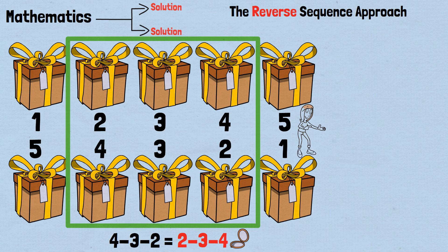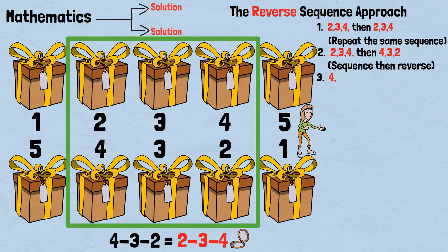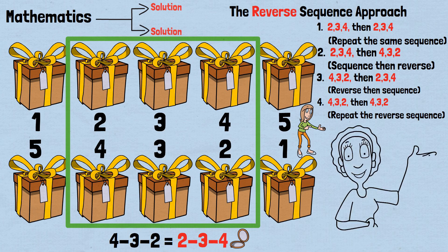Because of this symmetry, we actually have 4 different ways to guarantee victory. 1: 2-3-4, then 2-3-4. Repeat the same sequence. 2: 2-3-4, then 4-3-2. Sequence then reverse. 3: 4-3-2, then 2-3-4. Reverse then sequence. 4: 4-3-2, then 4-3-2. Repeat the reverse sequence. All 4 approaches are mathematically equivalent and equally guaranteed to succeed.